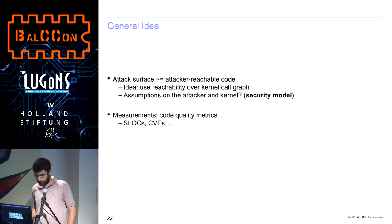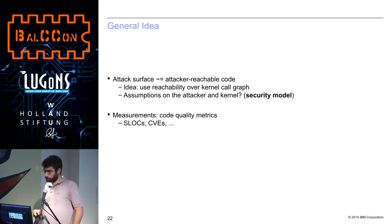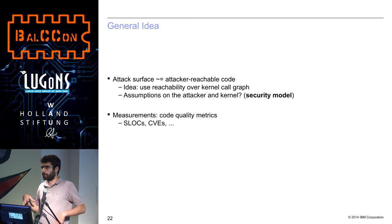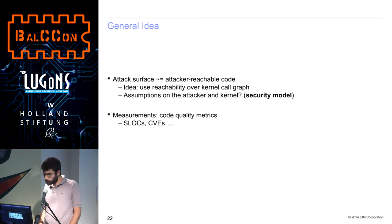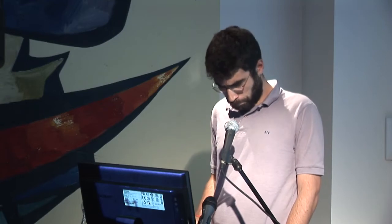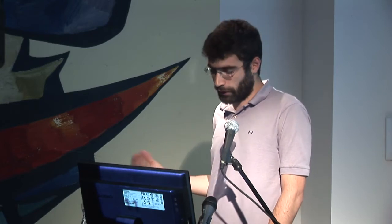So we need to take care about all of these points when we measure the attack surface. The general idea of the attack surface is attacker-reachable code. And the reason I'm mentioning it is because often it's confused with attack vectors, which is rather the API, the entry points that you have into the program you're looking at. The idea for us was to use the reachability over the kernel call graph. We generate a call graph of the kernel and look at which pieces of code are actually reachable for the attacker based on assumptions we make on the attacker itself. Then once you've done that, you can measure it with traditional code quality metrics such as number of lines of code, CVEs, and so on.